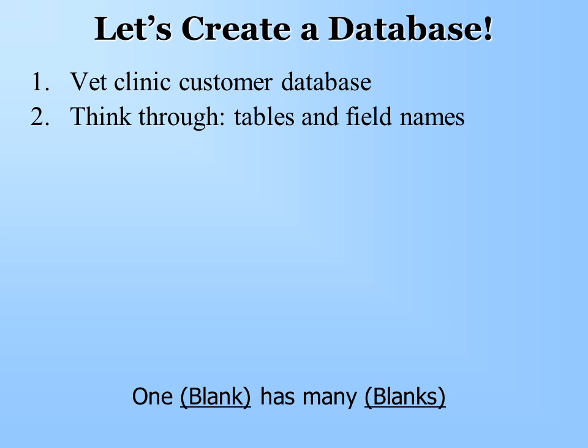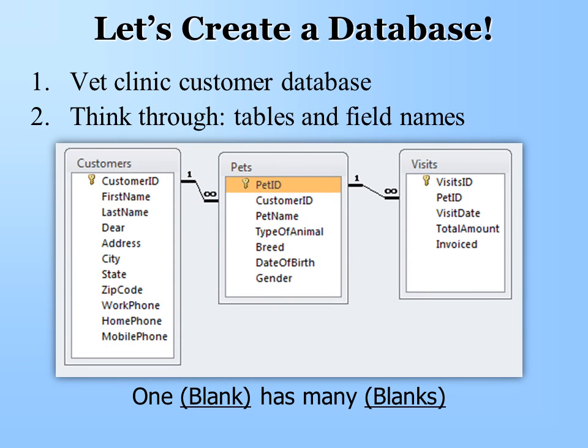The database we're going to create is a vet's clinic — one vet, and we want to keep track of their customers. The first thing you want to do is think it through. We ask the question: one blank has many blanks, and our goal is to fill in those blanks — those blanks become the tables. For example, one customer has many pets, so Customer and Pets each becomes a table. One pet has many visits, and then we would have three tables.